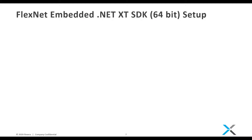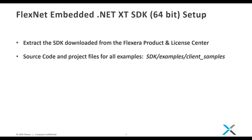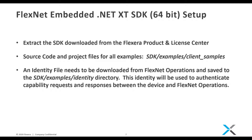I'm going to be demonstrating the FlexNet Embedded .NET XT SDK on a 64-bit Windows system. First, extract the SDK downloaded from the Flexera Product and License Center. The source code and project files for all examples can be found in the SDK Examples Client Samples directory. In order to run the examples, an identity file needs to be downloaded from your FlexNet Operations Evaluation instance and saved to the SDK Examples Identity directory. This identity file will be used to authenticate the capability requests and responses between the device to be licensed and FlexNet Operations. I will now show how to perform this task.